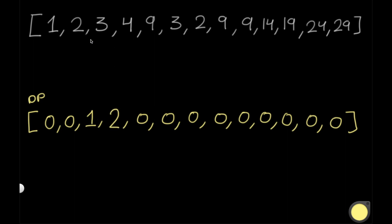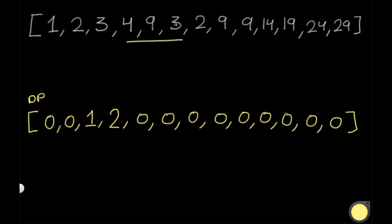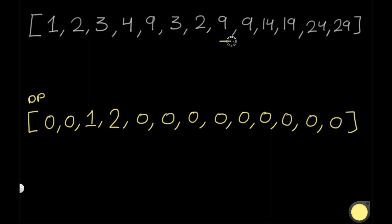Now we move the window to 3, 4, and 9. There is no arithmetic sequence here because 3 and 4 differ by 1, but 4 and 9 differ by 5, so it remains 0. Moving on: 4, 9, 3 — not arithmetic; 9, 3, 2 — not arithmetic; 3, 2, 9 — not arithmetic; 2, 9, 9 — not arithmetic; 9, 9, 14 — also not an arithmetic sequence.